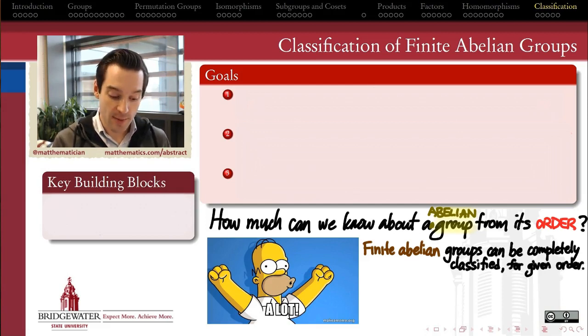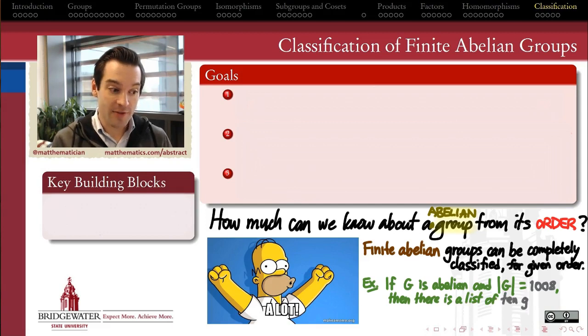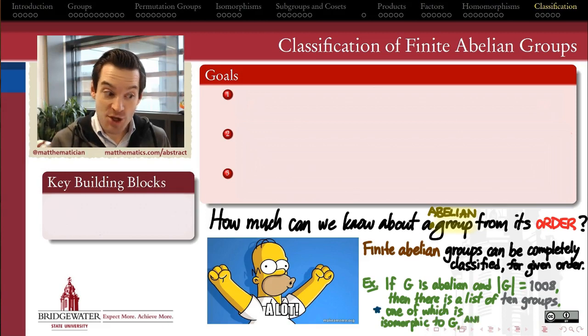Finite abelian groups can be completely classified for a given order. For example, if G is an abelian group and its order is 1008—this is going to be an example that we work with in this series of videos—we'll be able to show that there's a laundry list of in total ten different abelian groups of order 1008, and G must be isomorphic to one of them. And not only that, all of those groups are going to be made out of these really comfortable concrete building blocks. They're all going to be direct products of cyclic groups.